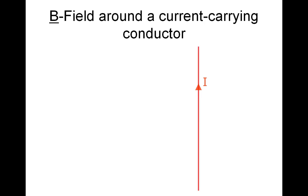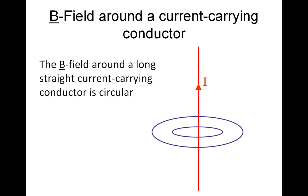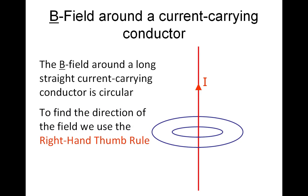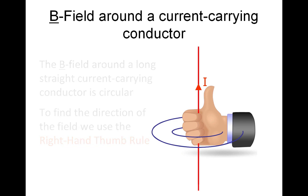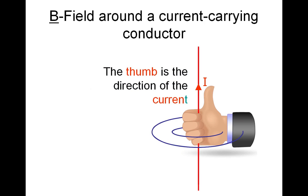Looking at the magnetic field around a current carrying conductor, we get these nice circles. To work out the direction of the field, we need to use the right hand thumb rule. The thumb is in the direction of the current and your fingers wrap in the direction of the field. So in this case, we have an anti-clockwise field.